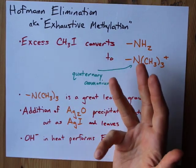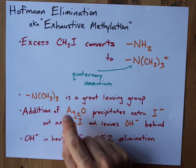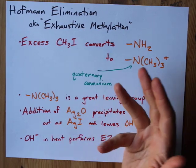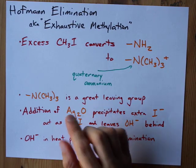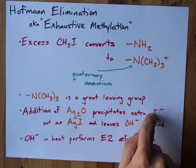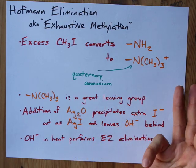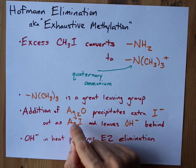Now where does that OH- come from? Usually it's because we add Ag2O to the solution. The silver ions precipitate with the extra iodide that's in solution.